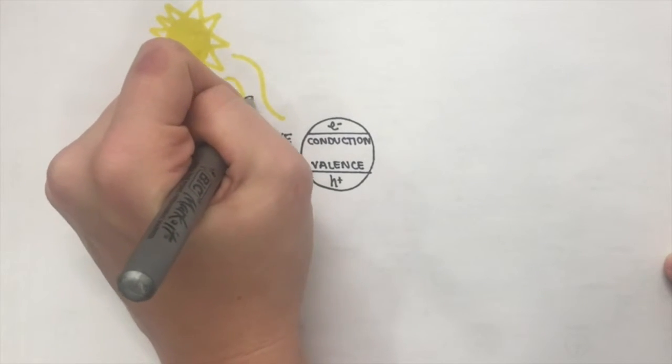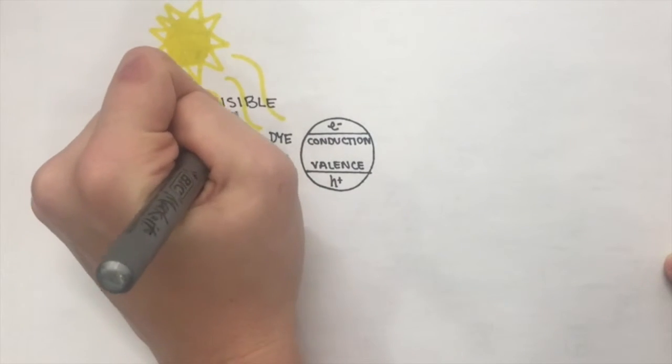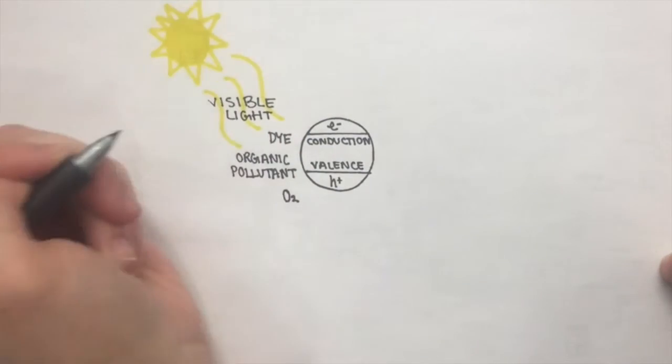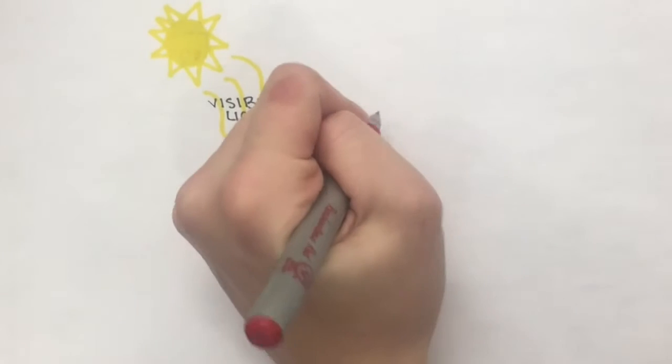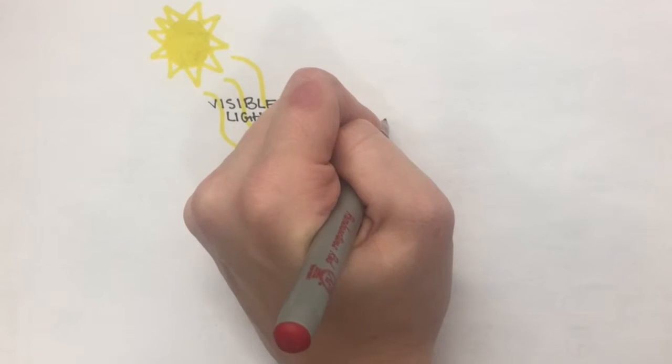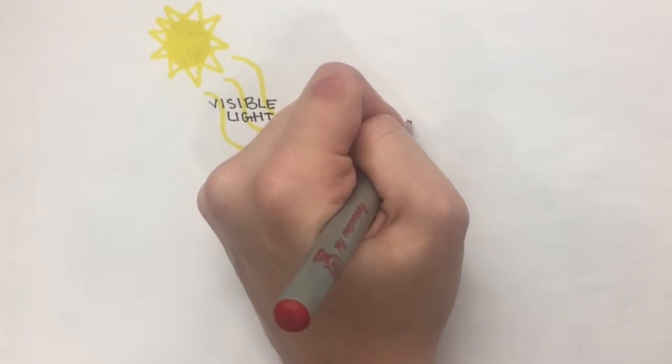Electrons from the light are injected into the conduction band of the semiconductor. This excites the pollutant molecules to a higher energy state and creates a charge separation on the band gap of the semiconductor.